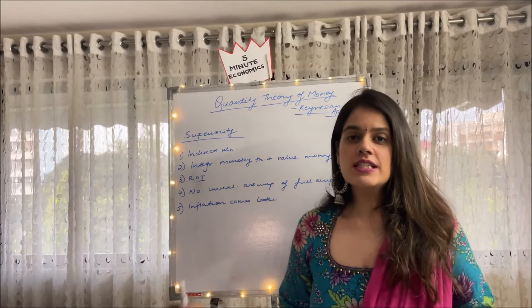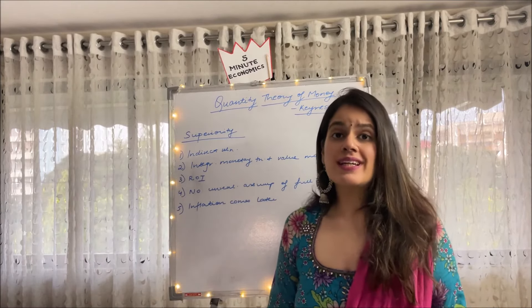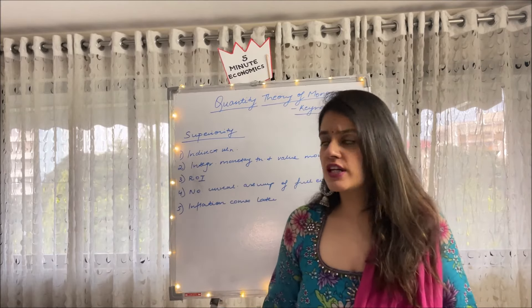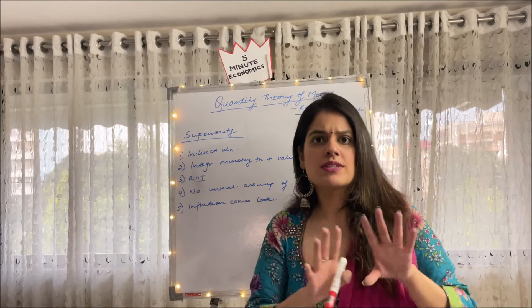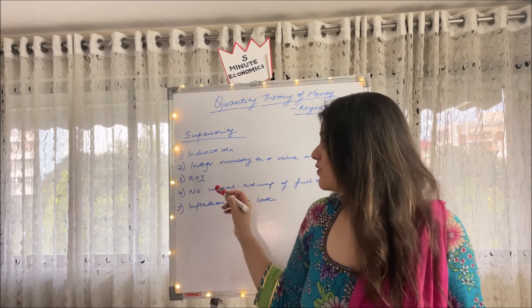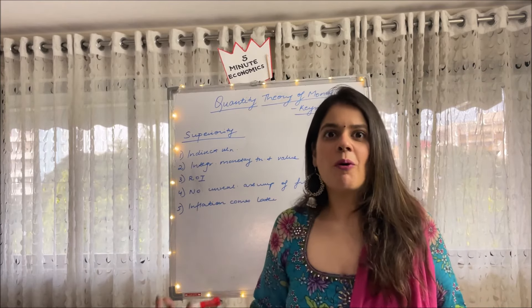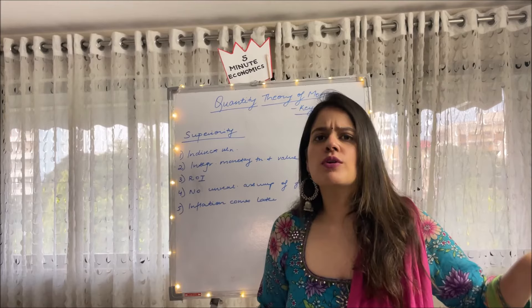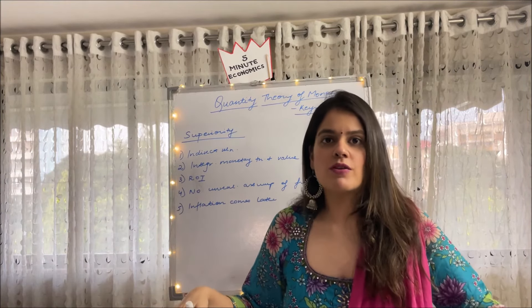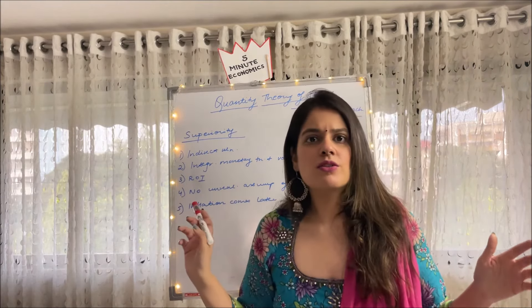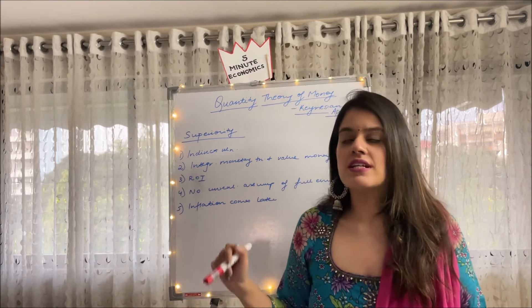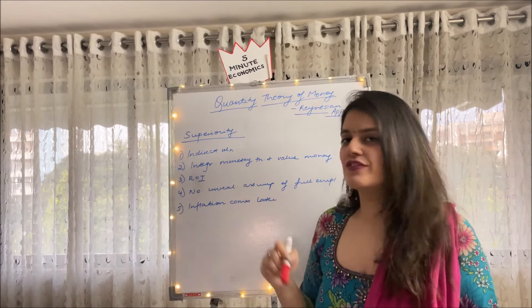Moving to the superiority of this theory over the traditional theory. First, Keynes showed an indirect relationship between quantity of money and prices, rather than a direct one. Second, he integrated monetary theory with value theory, which had been kept separate before. Third, he introduced the concept of ROI, which had been ignored until now. Fourth, he said full employment is an exception — not always the case as previously assumed — and therefore he demarcated between the unemployment phase and the full employment phase. Lastly, he showed that as long as the economy has unemployment, we don't face price rises or inflation; inflation only comes when full employment is reached.